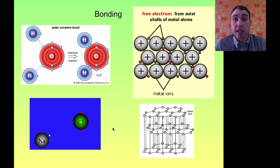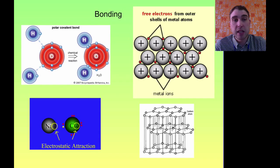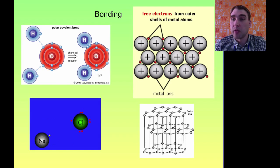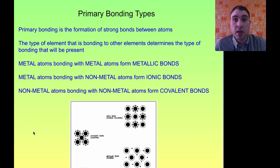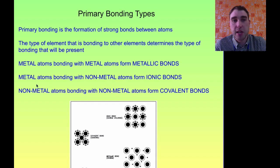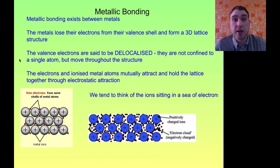Today we're going to look at primary bonding on Flipping Science. We're going to look at metallic bonding, ionic bonding, and covalent bonding. These are primary bonds — that is, bonds between atoms. There are three types: metallic bonding, which happens between metals; ionic bonding, which happens between metal atoms and non-metal atoms; and covalent bonding, which happens between non-metal atoms.